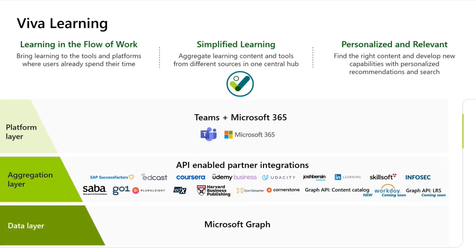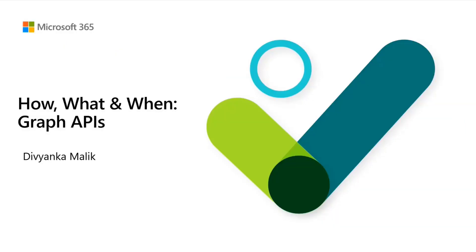Viva Learning has partnered with leading learning providers and learning management systems to make Viva Learning a comprehensive and extensible learning platform. Providers like Pluralsight, Coursera, GoOne, and others offer breadth and depth of learning content spanning industries, roles, and subjects. Our three LMS partners — Cornerstone On Demand, SAP SuccessFactors, and Saba Cloud — bring advanced learning features into Viva Learning such as assignments and learner records. We are also integrating with Workday as an LMS partner and building Graph APIs, which allow you to connect any learning provider or LMS to your Viva Learning tenant, even if they aren't a preconfigured partner. Let's now look at the how, what, and when of the Viva Learning Graph APIs.